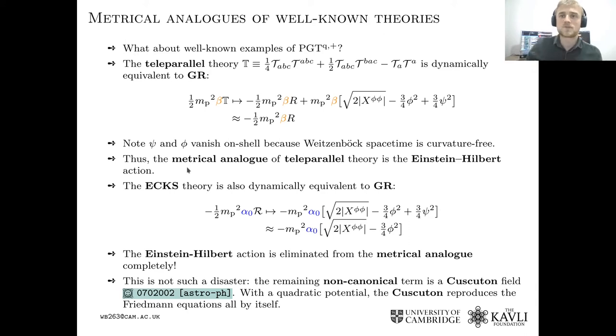So what about Einstein-Cartan theory? Well, Einstein-Cartan theory is also dynamically equivalent to general relativity if there are no fermionic spin sources, so if the torsion vanishes. So we ask what is the metrical analog of Einstein-Cartan theory? And we immediately are in big trouble because the linear invariant, the Ricci scalar term, gets eliminated from the metrical analog immediately and you just end up with this non-canonical scalar field term. This is very strange. You ask where did your gravity go? It actually turns out to be okay, because this particular form is called the quadratic cuscuton field. And if you evaluate the equations of motion of this field, you'll get the Friedman equations of cosmology back. So it does work still, but it's a very strange perspective on Einstein-Cartan theory.